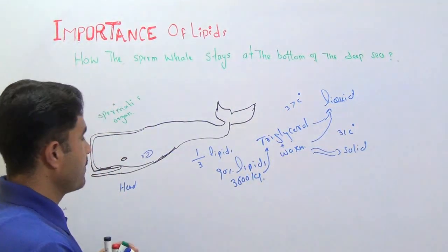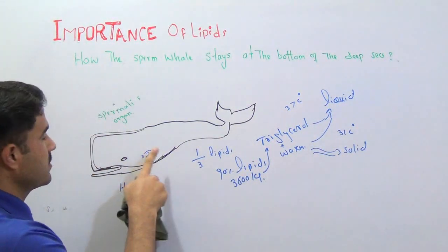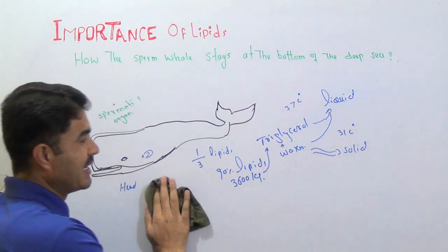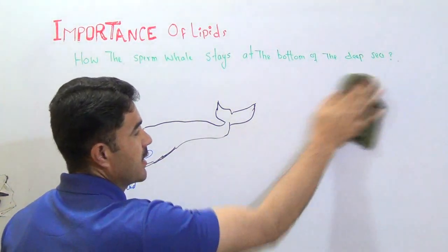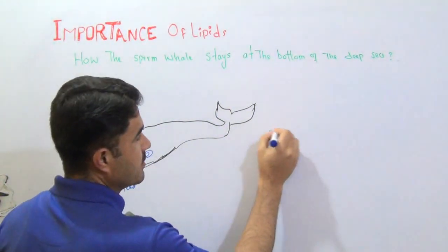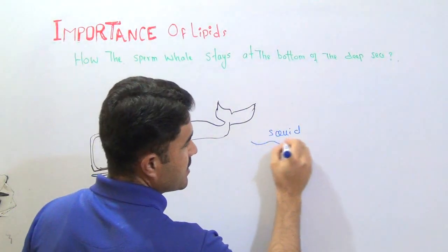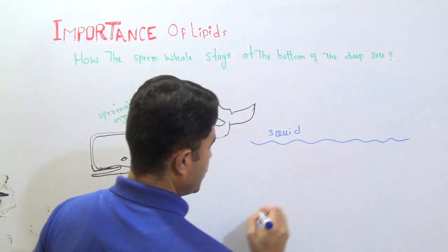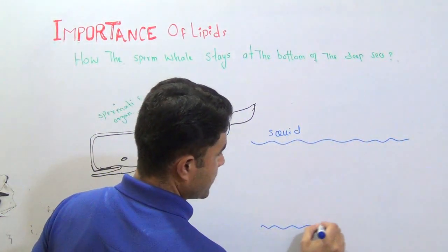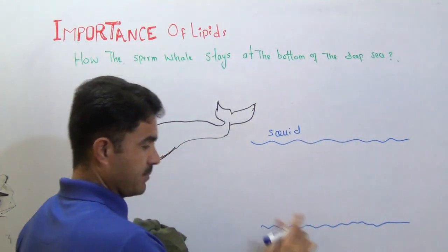That the food of this whale is the squid. It eats squid. Squid is a kind of animal. If you see, this is the ocean. Let's suppose, this is the ocean. And this is the top of the ocean. And this is the bottom. Bottom of the ocean.